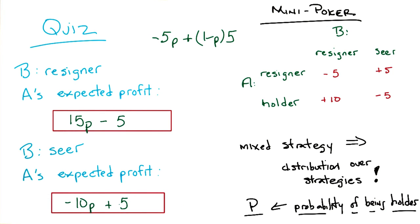Okay, you want to check it? Yeah, that's a good idea. So again, if P is 1, then that means you're always a holder, which should be the minus 5. And if we put in a 1 there, we get 5 minus 10 is minus 5. And if P is 0, that means we're always a resigner. And we should get a 5 for that. And yeah, so we zero out the negative 10 and we get the 5. Exactly.